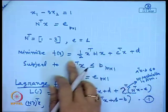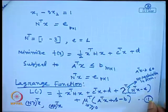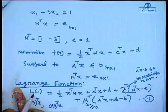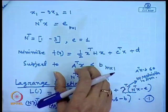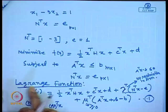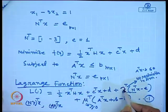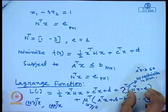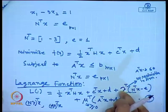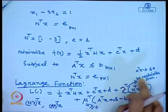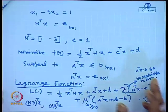Last class we discussed the problem formulation of quadratic optimization using the simplex method. Recall, our problem is to minimize f of x which is in quadratic form. We have inequality constraints and equality constraints, but these inequality and equality constraints are affine — linear functions. We formulated this into a standard Lagrangian function by converting inequality constraints into equality constraints, forming the Lagrangian function. The Lagrange multiplier mu is associated with the inequality constraint and its value must be greater than or equal to 0.